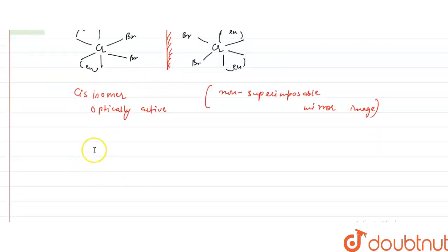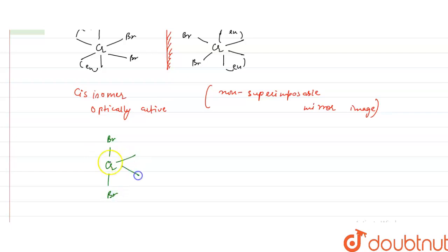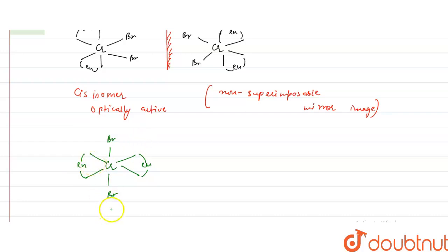The other isomer is the trans structure. In the trans isomer, the bromine ligands are trans to each other, and the ethylenediamine ligands are also trans to each other.